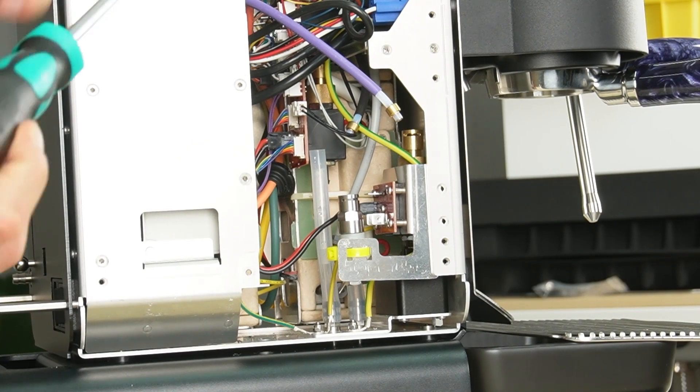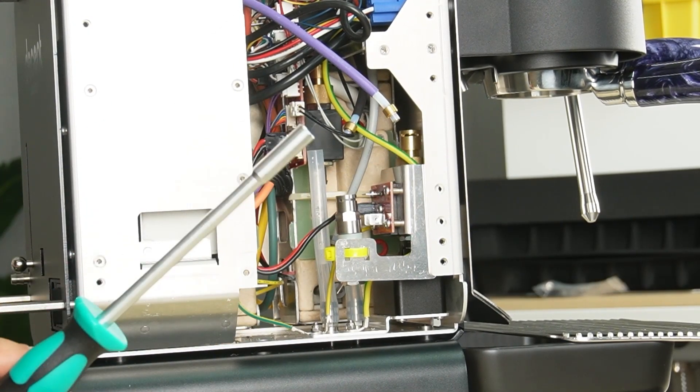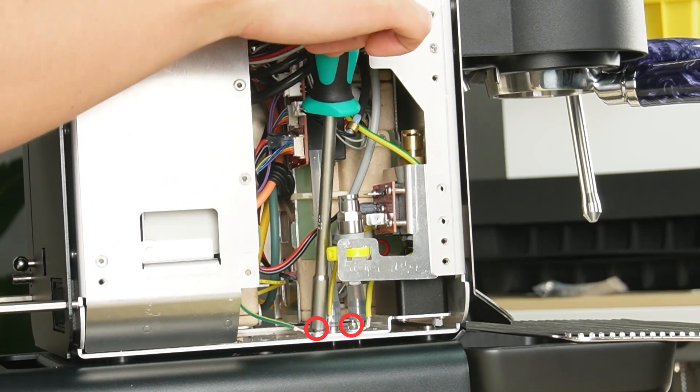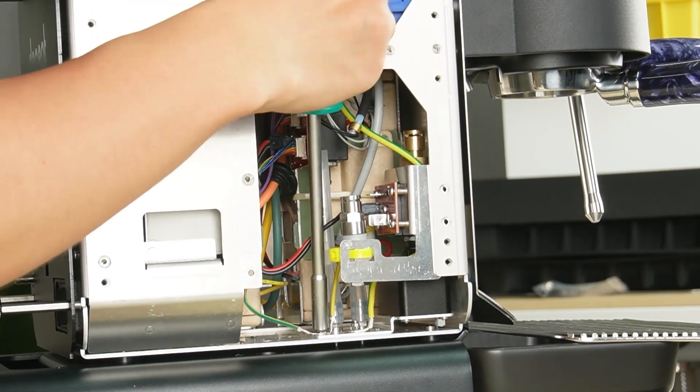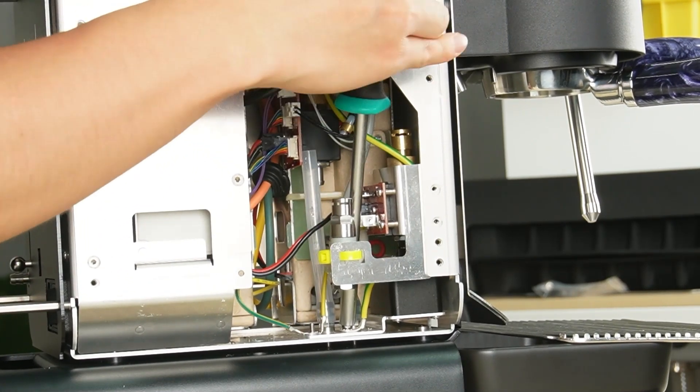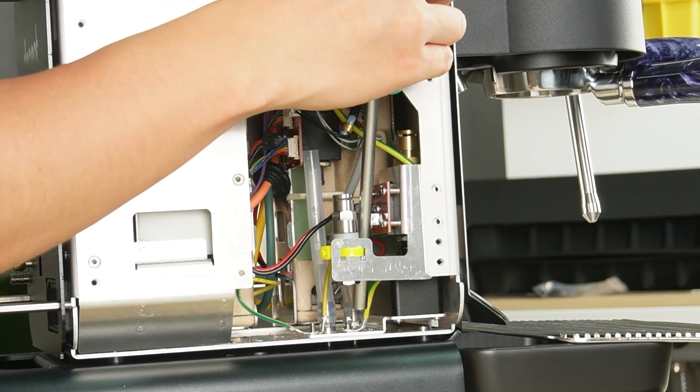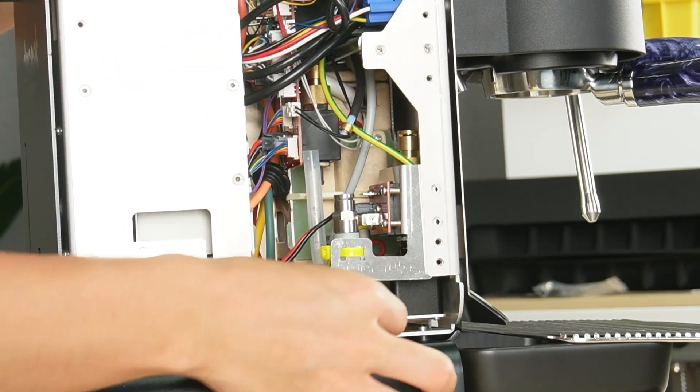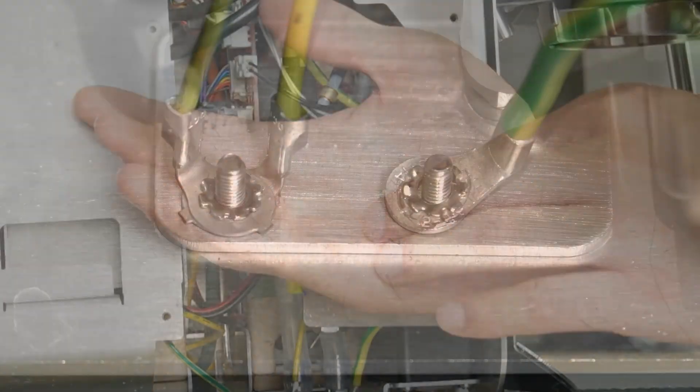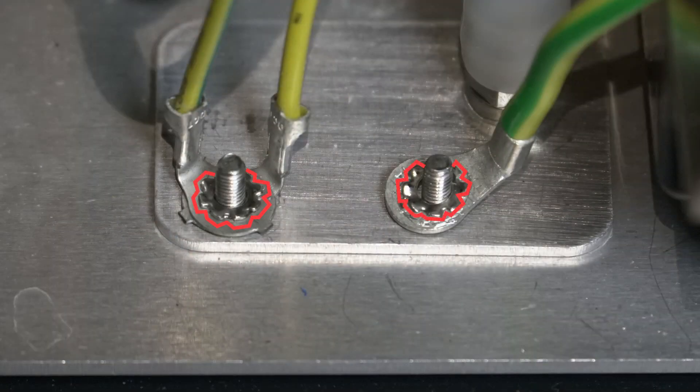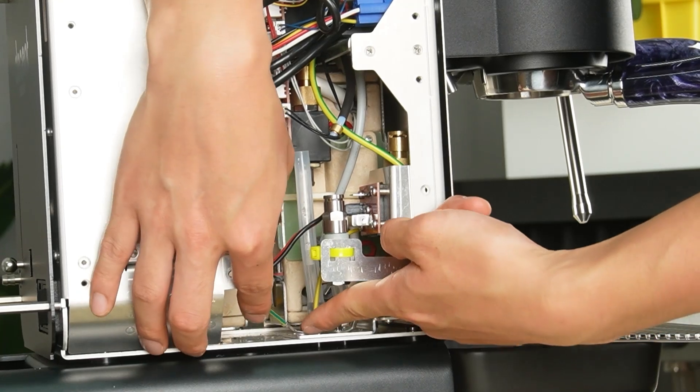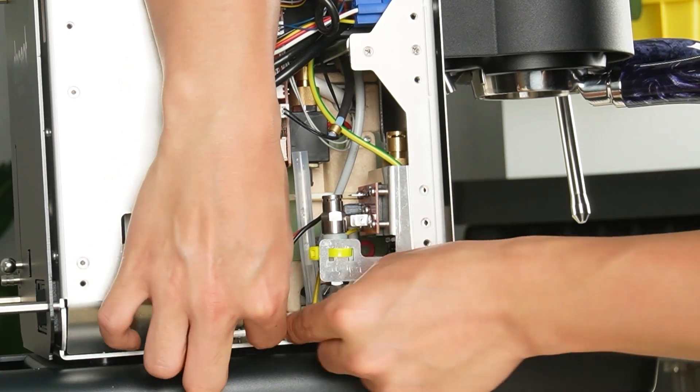Use a 5.5mm hex nut driver to remove the two nuts securing the ground cables. Make sure to keep the washers. They may stay on the cables or come off with the nuts. Move the ground cables out of the way.